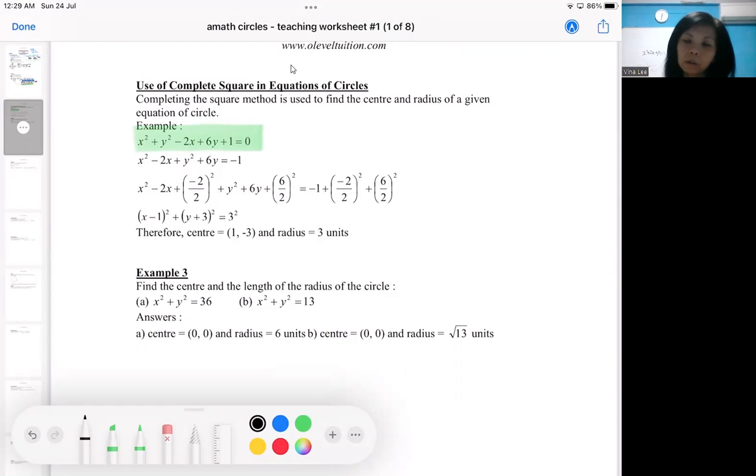So there are two methods. This is the general method you're using of complete square. There's another method of memorizing the formula. So usually we'll go about completing square. So how are we going to go about completing square?